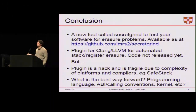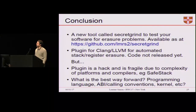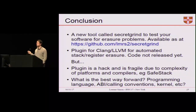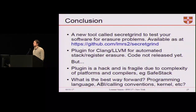To conclude, I've presented a new tool we hope developers will use to check their code, and a Clang LLVM plugin to automatically erase the stack and registers of sensitive functions. This plugin is kind of a hack — it's fragile due to the complexity of platforms and the number of components involved. That raises the question: what is the best way forward? Do we need a specific ABI for cryptography? What support do we need from the kernel, from the compiler, from programming languages? These are the questions we ought to think about to solve this problem properly.